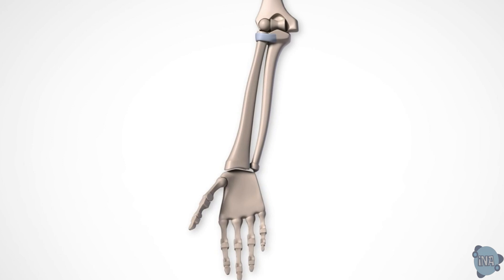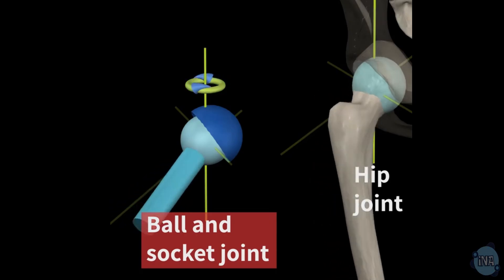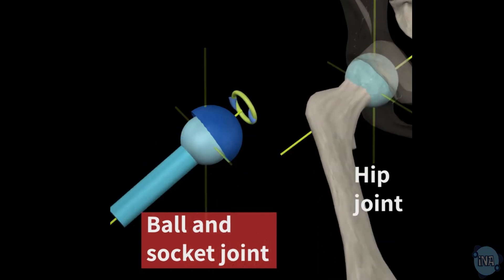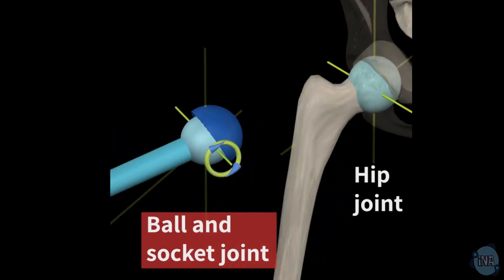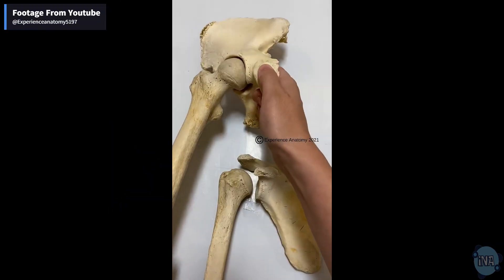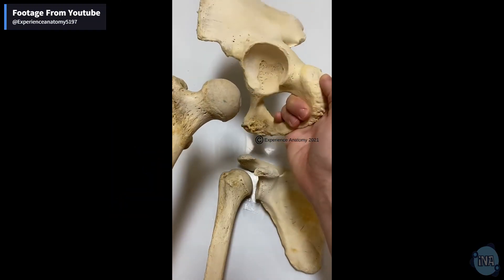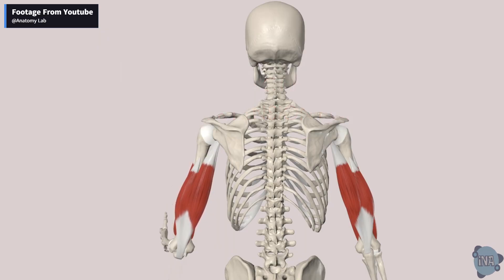Another pivot joint is located in the neck. Ball and socket joints, like those in your hips and shoulders, allow the greatest range of movement. In these joints, a ball-shaped end of one bone fits into a depression in another bone, allowing for extensive rotation and movement.